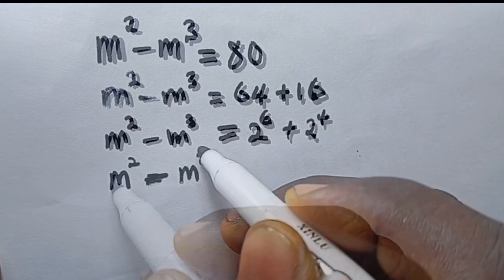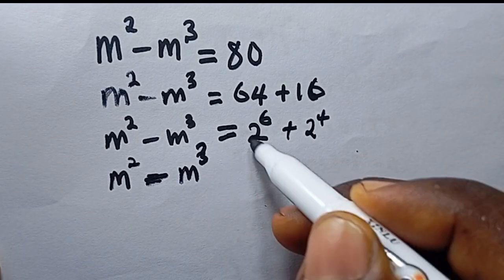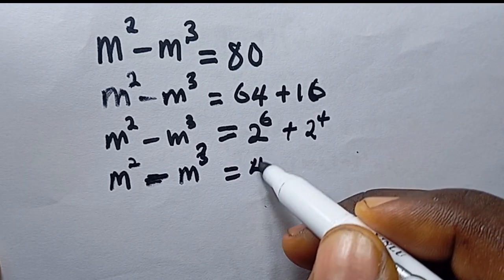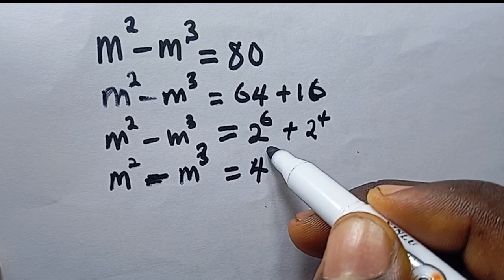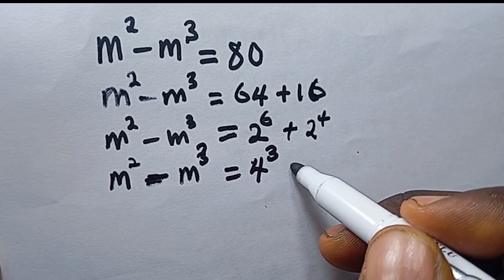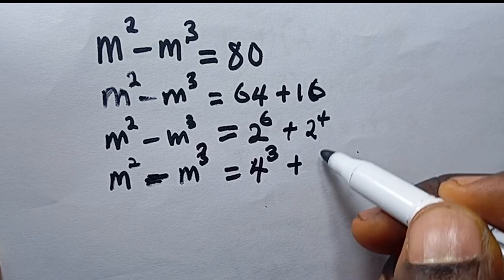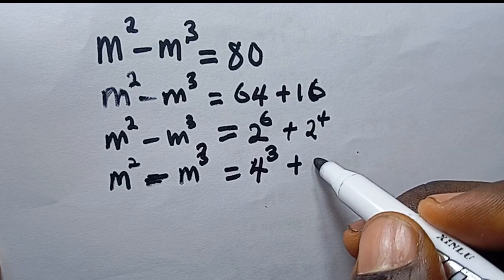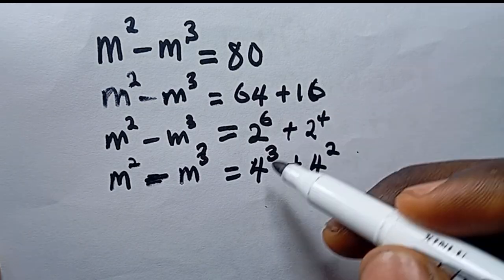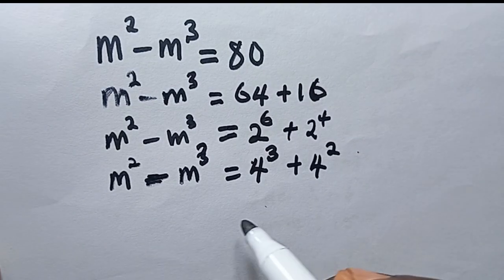Moving on, I can write 2 to the power 6 as 4 to the power 3, and 2 to the power 4 as 4 to the power 2. Just to confirm: 4 squared is 16 and 4 cubed is 64.